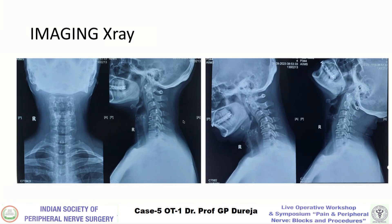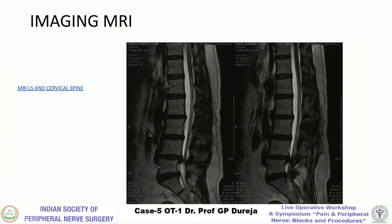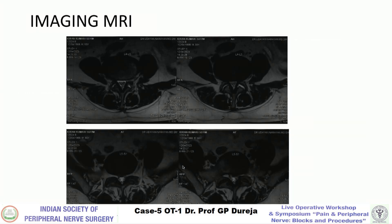On imaging we can see early kyphosis in the cervical spine and loss of discal spaces, and in the lumbar spine also we can see loss of discal space. On MRI we can see L4-L5 and L5-S1 disc involvement, and the same can be addressed on axial cuts.